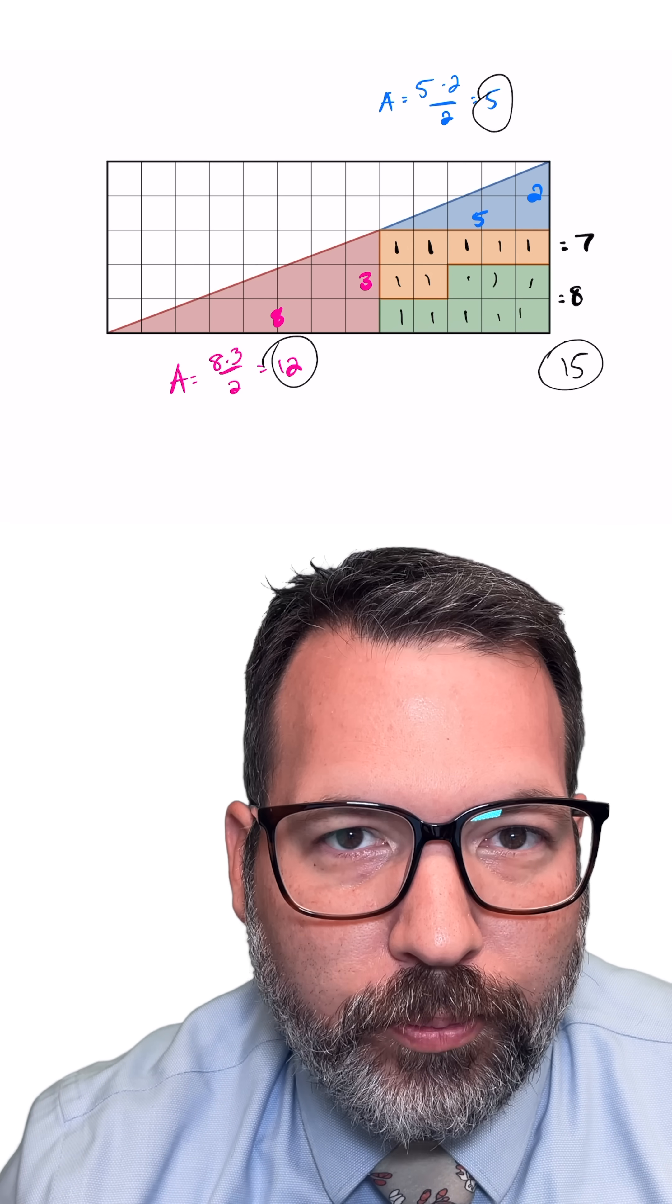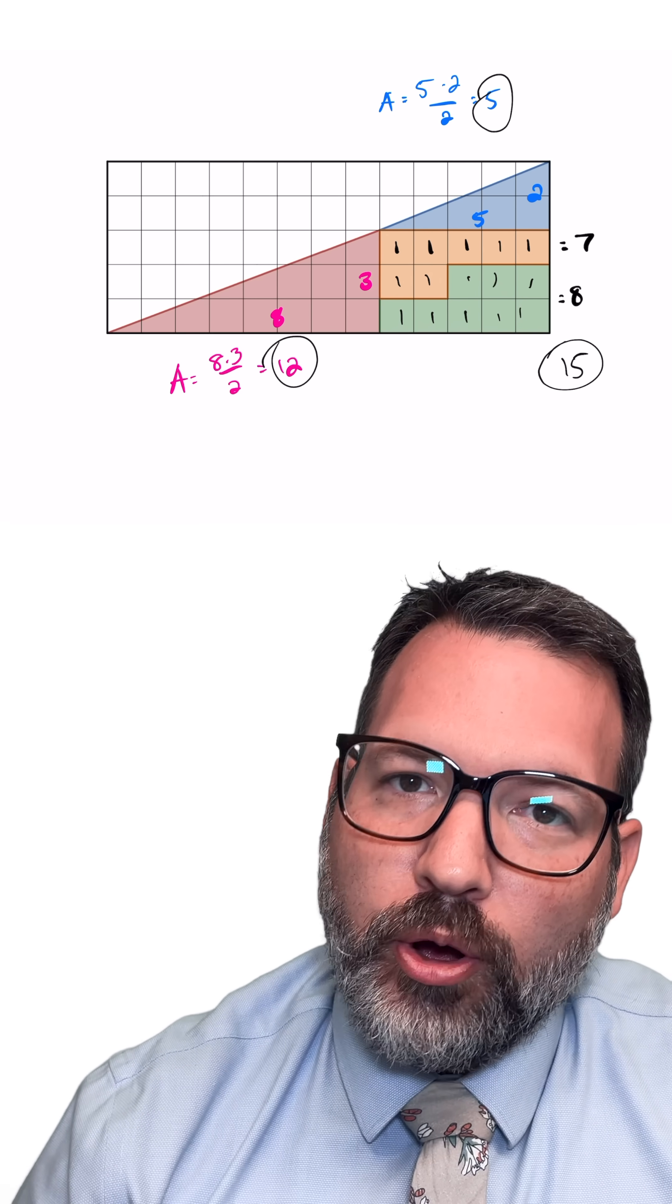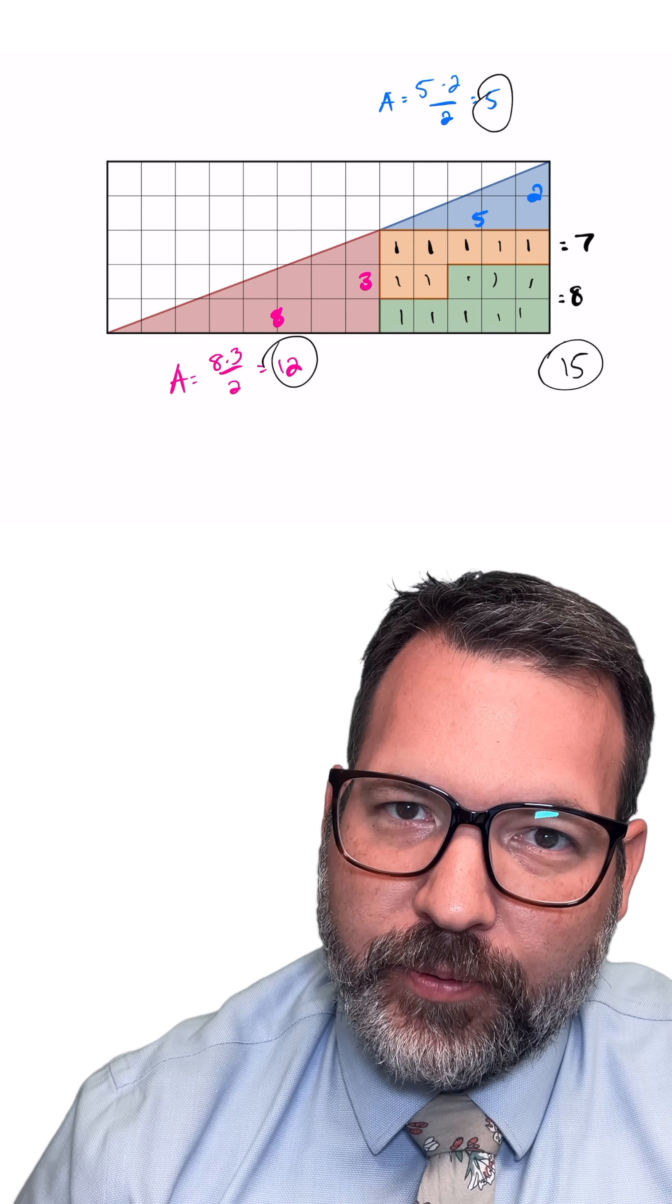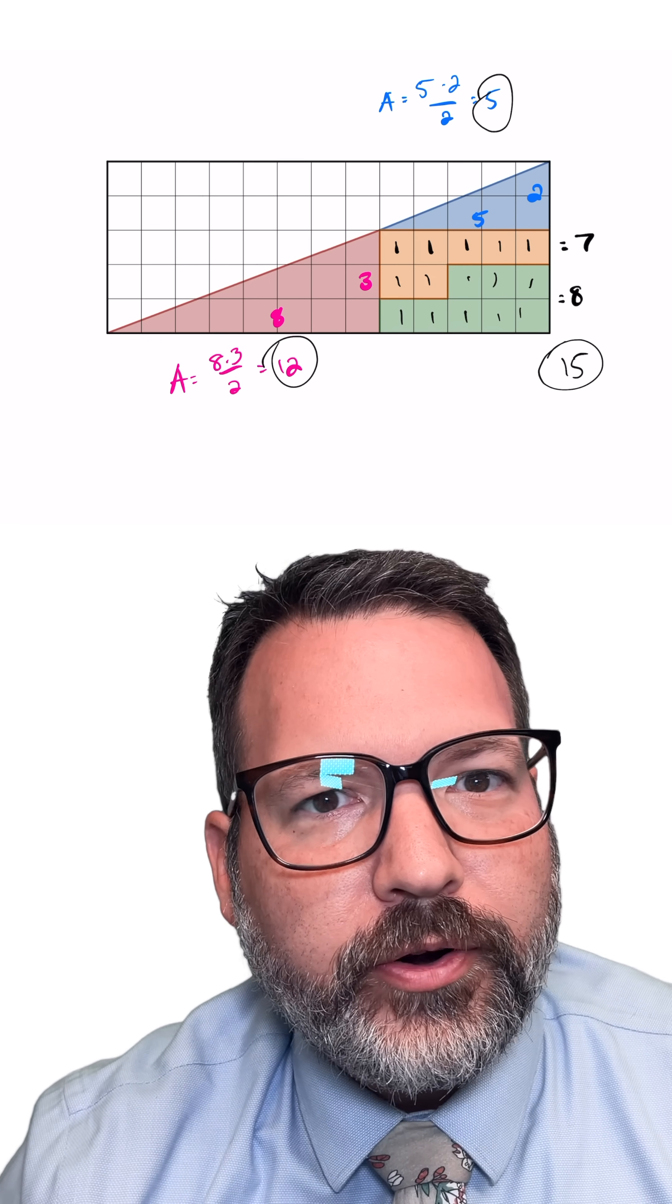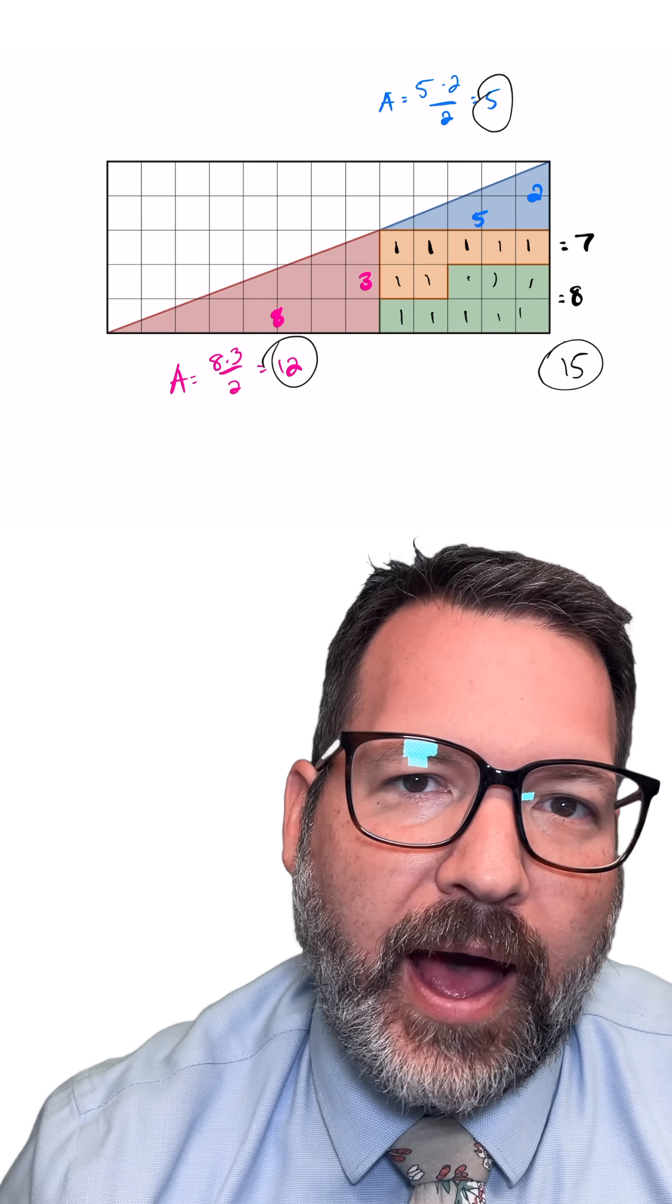So it's not actually that we're missing a whole block, it's that initially we were overestimating our area by half a block, and then when we rearrange the shapes, we underestimate the area by another half block.